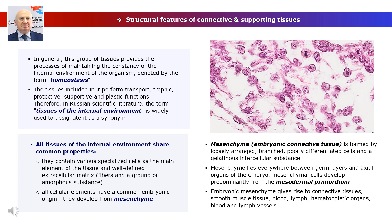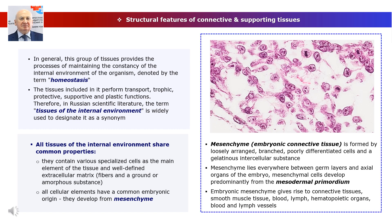The extracellular matrix contains fibers and a ground or amorphous substance. Secondly, all cellular elements of this tissue group have a common embryonic origin — they develop from mesenchyme. Mesenchyme, or embryonic connective tissue, is formed by loosely arranged, branched, poorly differentiated cells and a gelatinous intercellular substance. Mesenchyme lies everywhere between germ layers and axial organs of the embryo, and its cells develop predominantly from the mesodermal primordium.